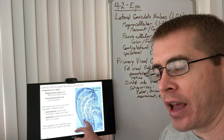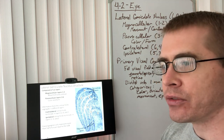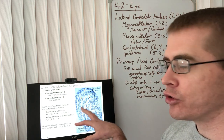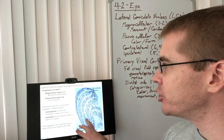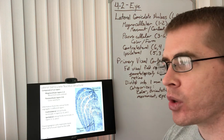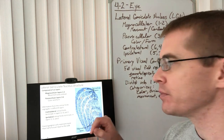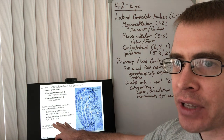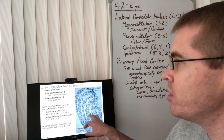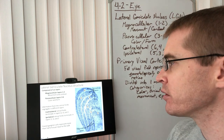Each LGN receives information from both eyes. The contralateral eye projects to layers 1, 4, and 6 of the LGN — one of the magnocellular layers and two of the parvocellular layers. The ipsilateral eye, the eye on the same side as the LGN we're talking about, inputs into layers 2, 3, and 5. Again, it gets one magnocellular and two parvocellular layers.